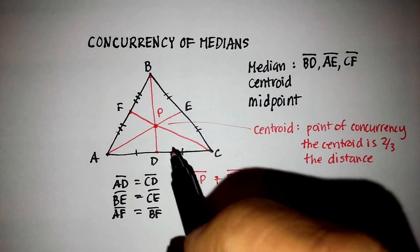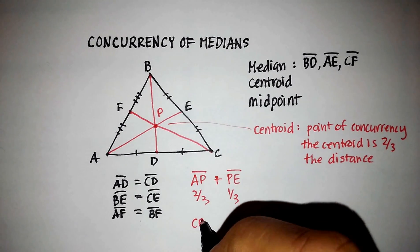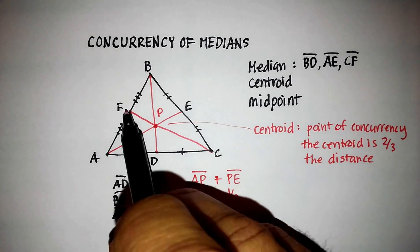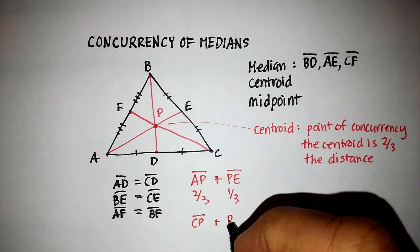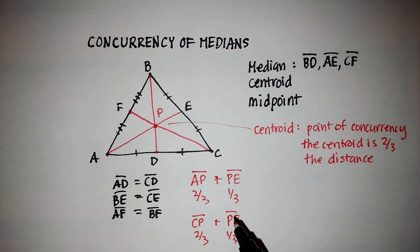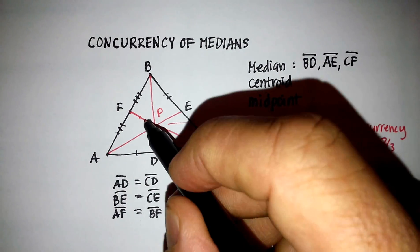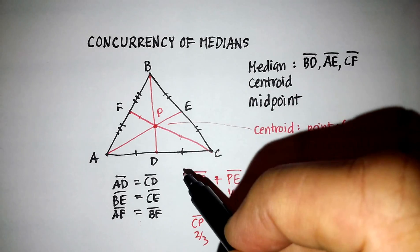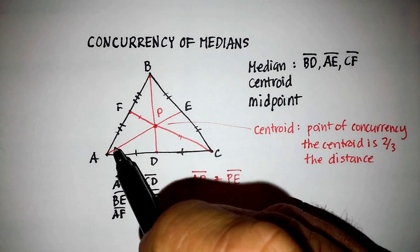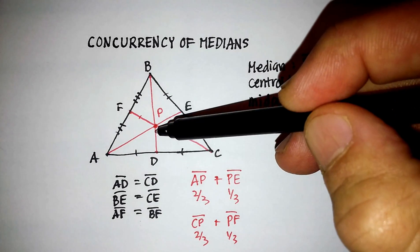Same thing here, right? That CP, line segment CP, is two-thirds or twice as large as line segment PF. So again, you'll notice that this little part here is one-half the distance of here. Or the way of looking at it is this is twice as large as that. This line segment is twice as large as that. And BP is twice as large as PD.